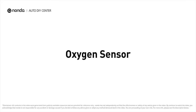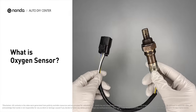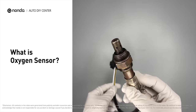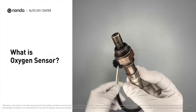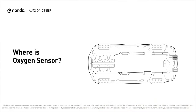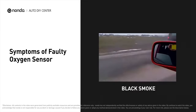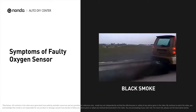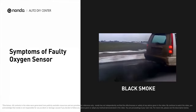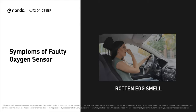Oxygen sensors, also known as O2 sensors, help determine whether the air-fuel ratio of a combustion engine is rich or lean in real time. Oxygen sensors are located before and after the catalytic converter. A faulty oxygen sensor may cause black smoke to come out from the exhaust, noticeable fuel efficiency loss, and a rotten egg smell.